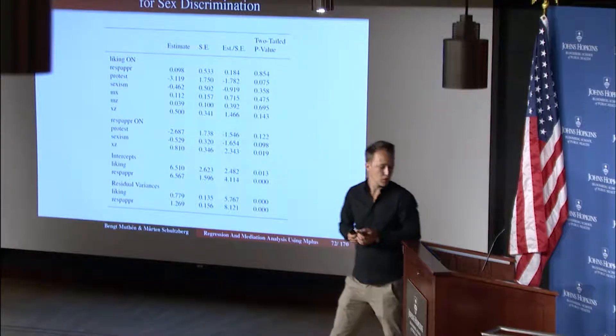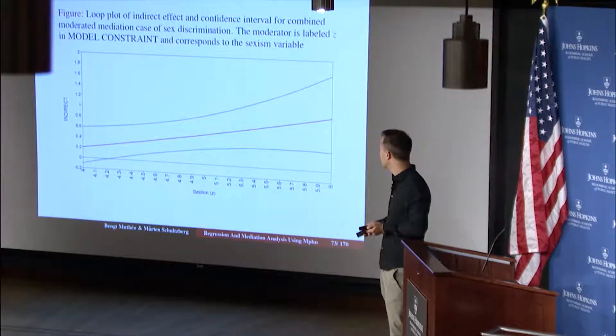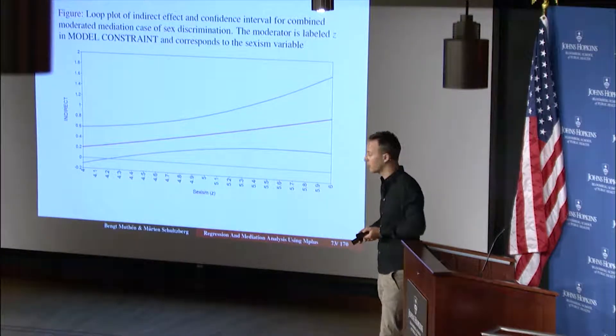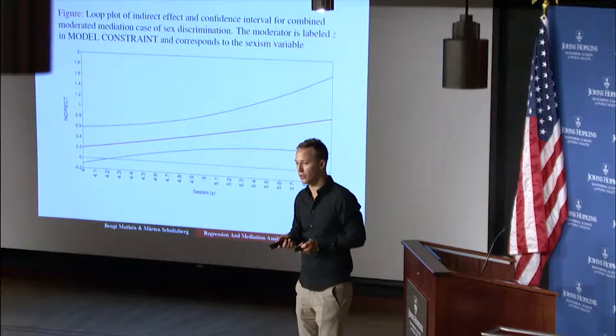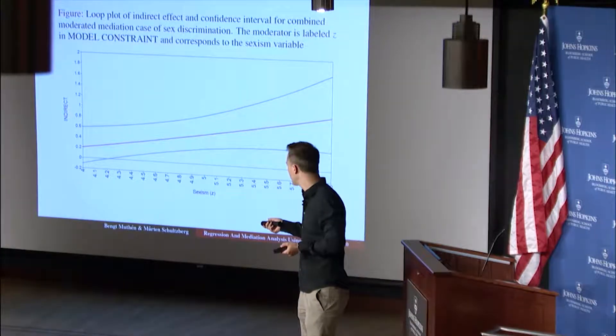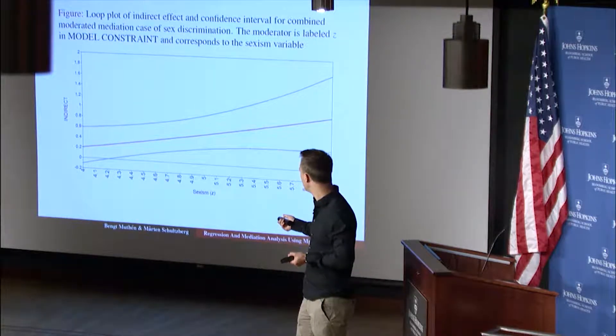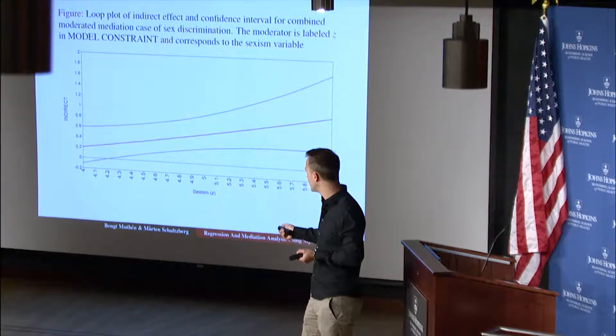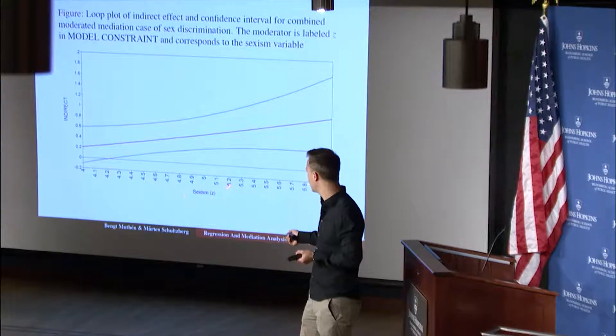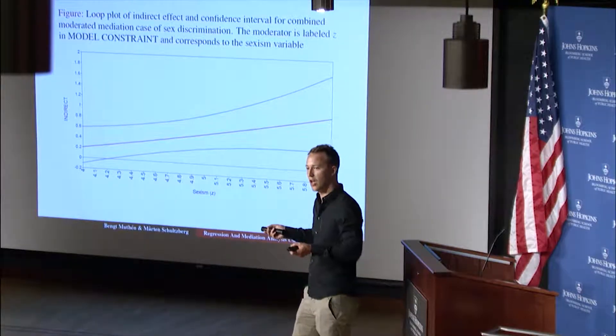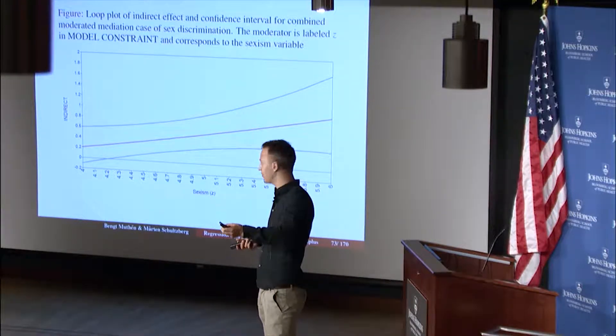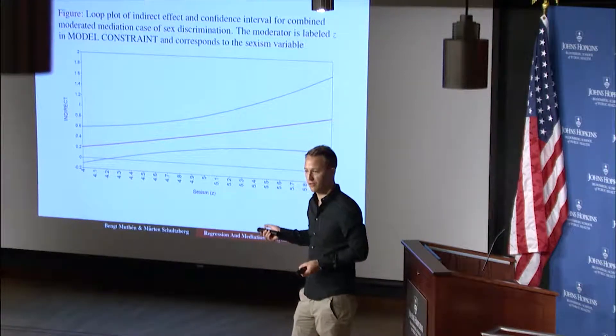But let's go on and look at the effect here. So this is the plot that we've looked at before. We didn't look at the input yet, but you kind of know how to get this with the model indirect command by now. So we have sexism, the moderator, and the indirect effect as a function of the moderator. So depending on how much you think sexism is a problem in society, the indirect effect differs, right?